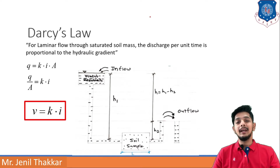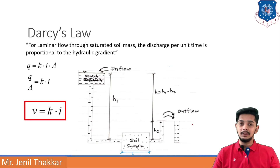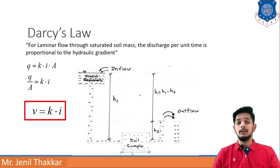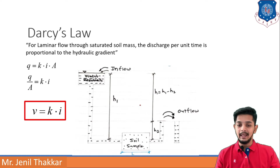Here, A is the total cross-sectional area, k is the coefficient of permeability, and i is the hydraulic gradient. In the diagram, water flows in as inflow and out as outflow. H1 is the entry height and H2 is the exit height, so the difference H1 minus H2 is the hydraulic head h. The soil sample length is L.